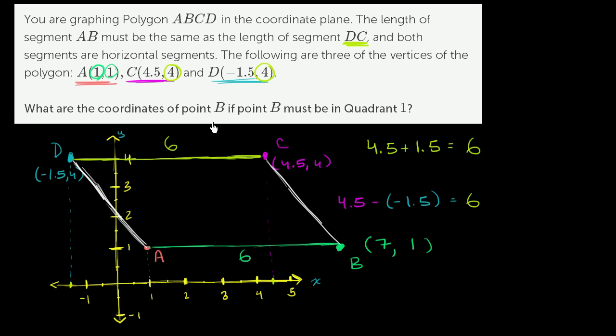So what are the coordinates of point B, especially if point B must be in quadrant 1? And notice we are definitely in quadrant 1. This is quadrant 1, this is quadrant 2, this is quadrant 3, and this is quadrant 4. The coordinate for point B is 7 comma 1.